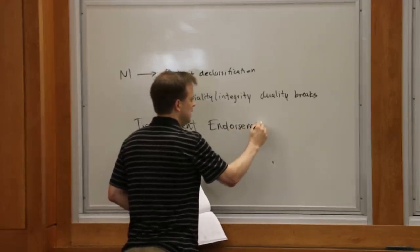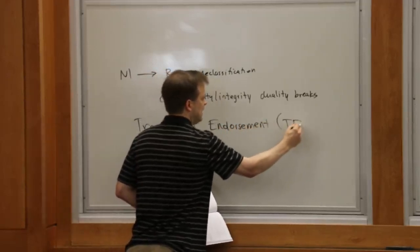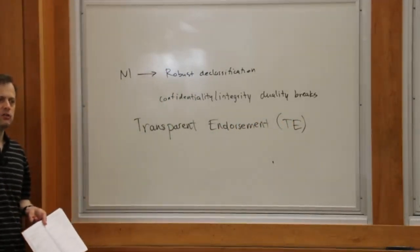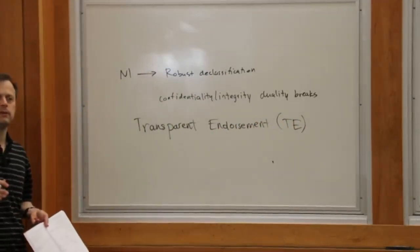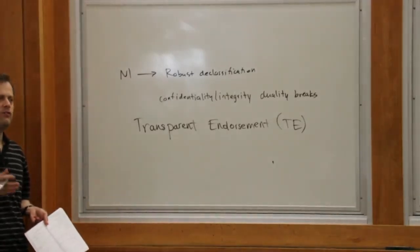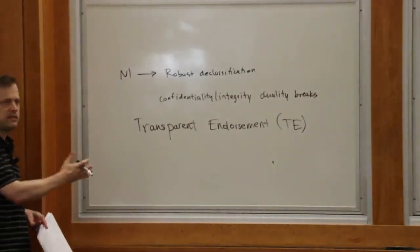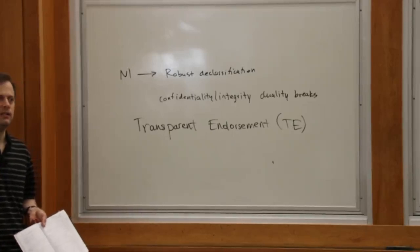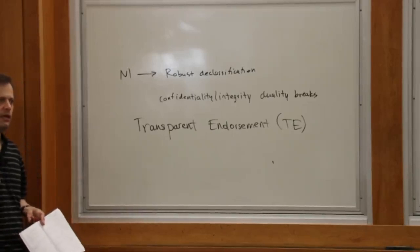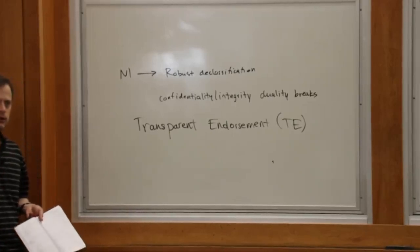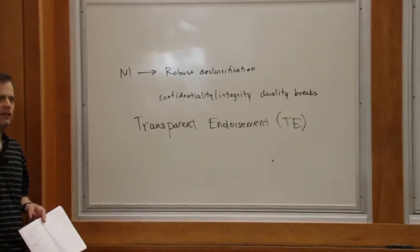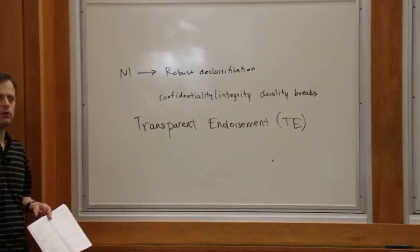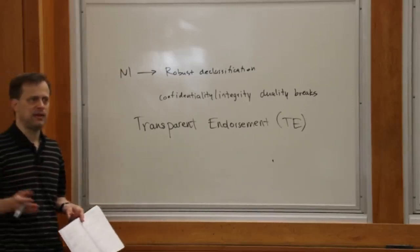Transparent endorsement is a condition that constrains the way that you can use endorsement in a way that's symmetrical to the way that robust declassification constrains the way you're allowed to use declassification. Like robust declassification, it's another for-safety property that whatever your security policies are, you really should satisfy.